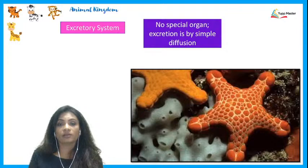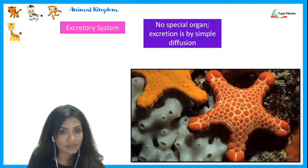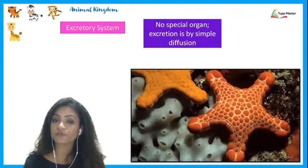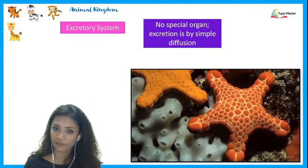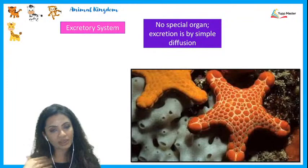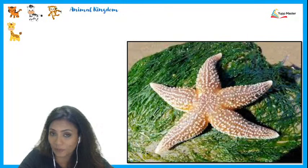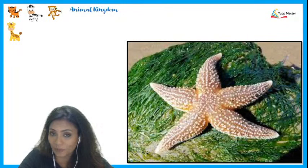Moving on — we learned about the circulatory, respiratory, and water vascular systems, and how they locomote. Regarding the excretory system, echinoderms do not have a special organ for excretion. Whatever excretion occurs is done simply by diffusing out the excretory waste products — there is no special excretory organ, just simple diffusion.